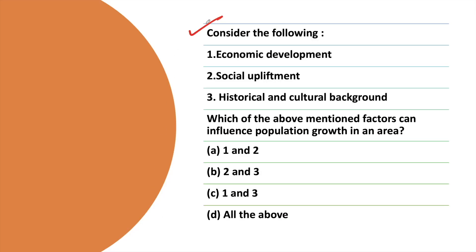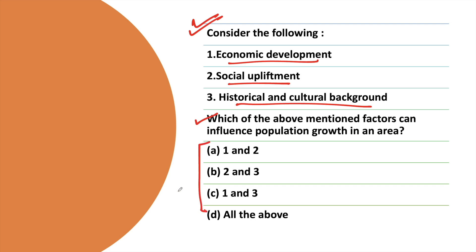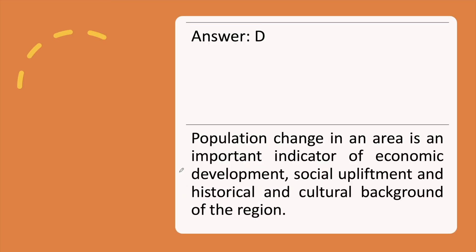The next question: Consider the following — economic development, social upliftment, historical and cultural background. Which of the above mentioned factors can influence population growth in an area? Take a moment, answer the question, then check it. The correct answer is option D, with the explanation.